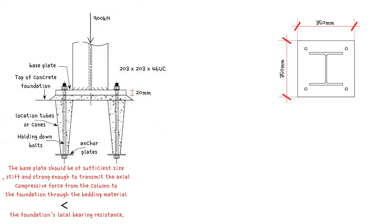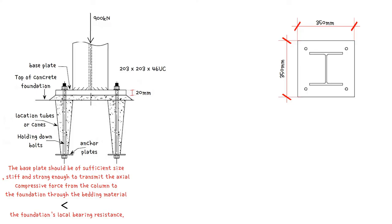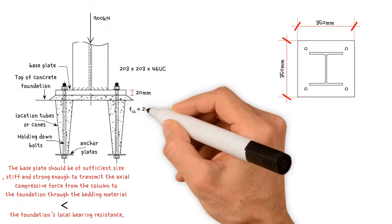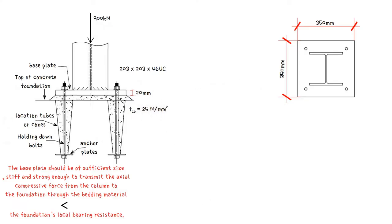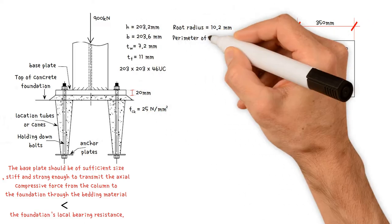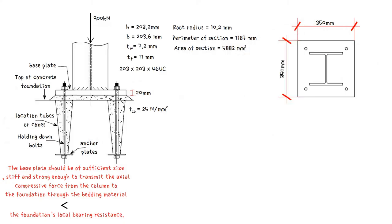The connection is assumed to be pinned with four bolts located outside the column profile. The compressive strength of the supporting concrete is 25 newton per millimeter squared. The dimensions and properties of the columns are as follows. You can find them in Blue Book Steel Universal Columns Table.